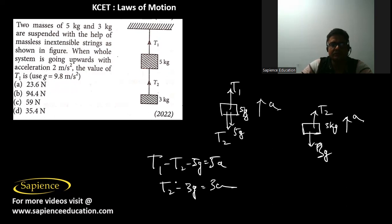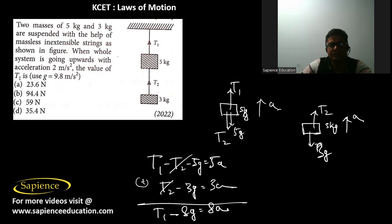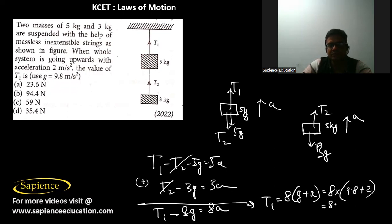T1 has to be found. Adding the two equations, T2 cancels out, giving T1 − 8g = 8a, so T1 = 8(g + a). With g = 9.8 and a = 2, this gives T1 = 8 × 11.8 = 94.4 newton.